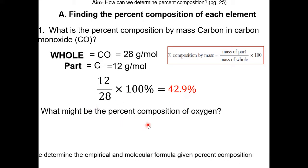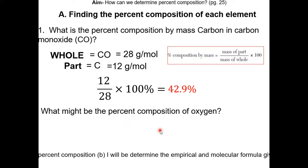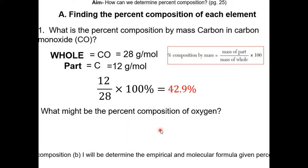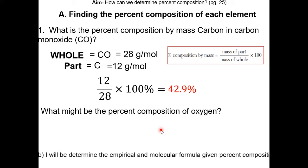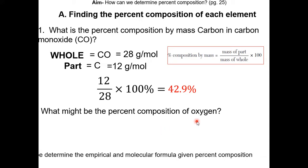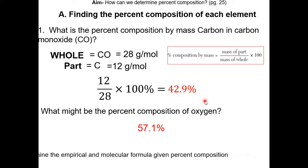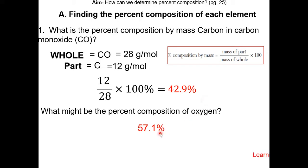You might also want the percent composition of oxygen. The sum of the percent compositions of the parts — carbon and oxygen — should be 100%. So 100 minus 42.9 is 57.1%, and that would be the percent composition of oxygen.